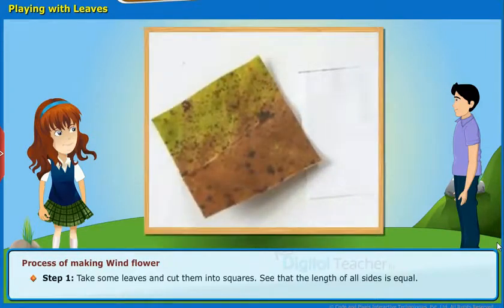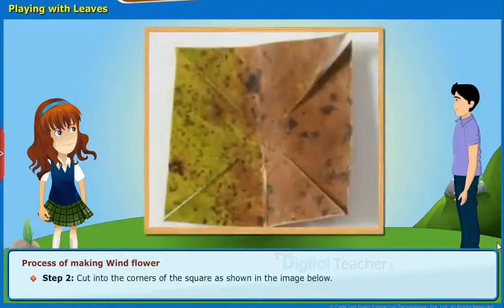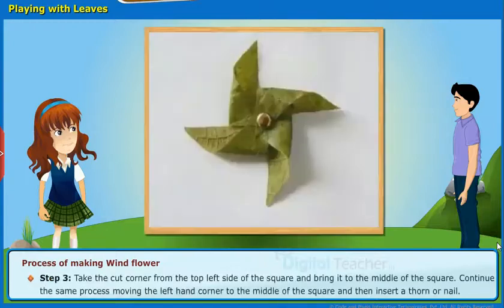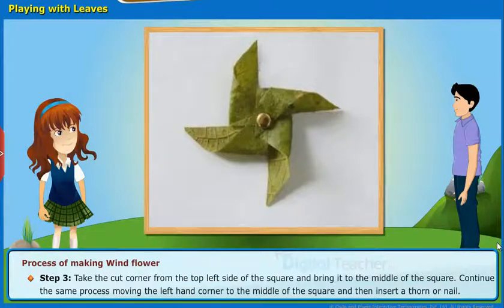Process of making a windflower. Step 1: Take some leaves and cut them into squares. See that the length of all sides is equal. Step 2: Cut into the corners of the square as shown in the image below. Step 3: Take the cut corner from the top left side of the square and bring it to the middle of the square. Continue the same process moving the left hand corner to the middle of the square, and then insert a thorn or nail.